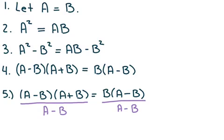Step five, divide both sides of the equation in step four by the quantity A minus B. Canceling out, we're left with the equation A plus B is equal to B.